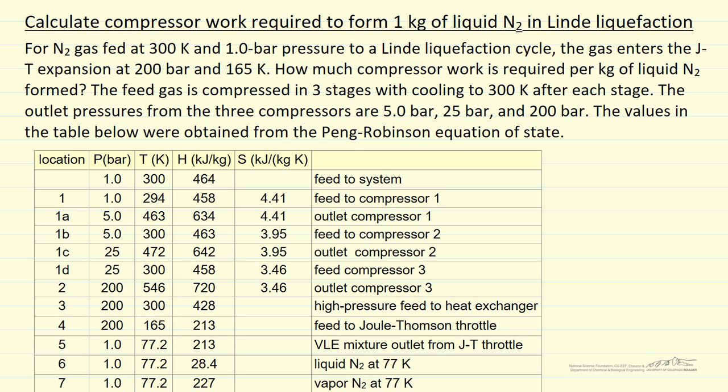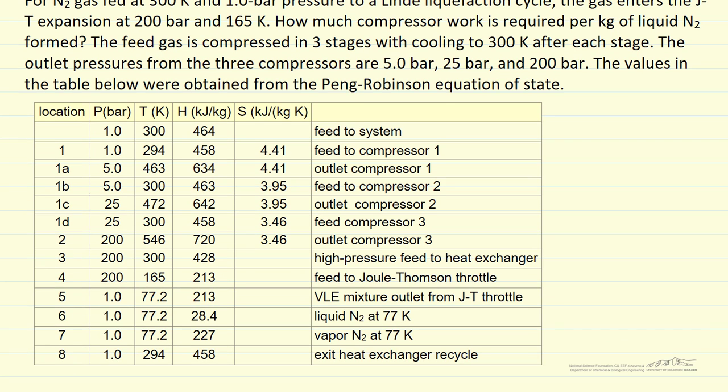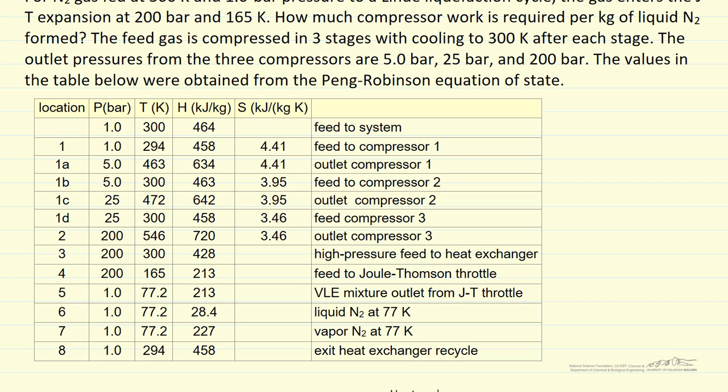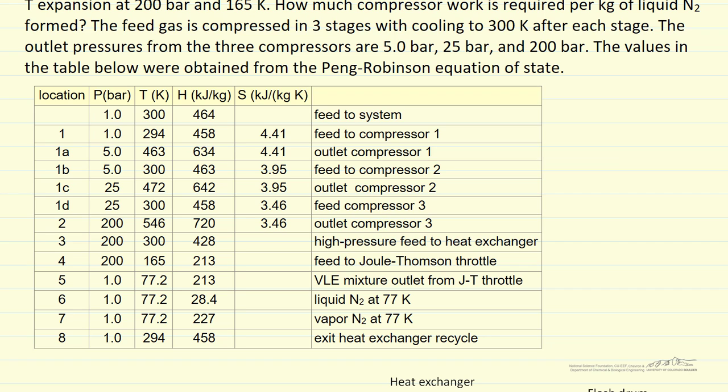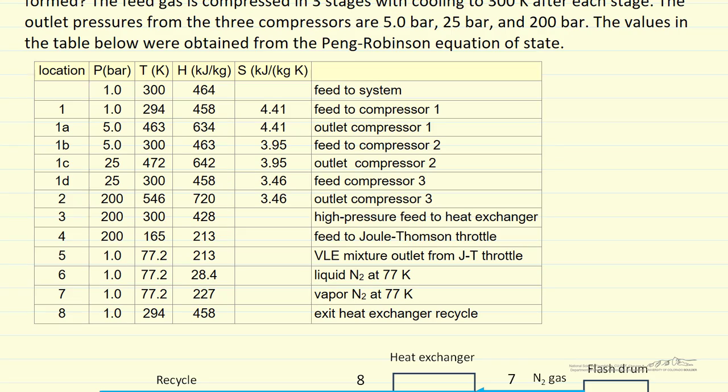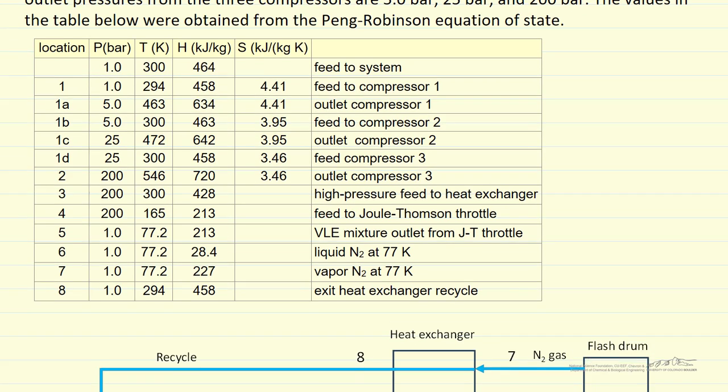The temperature would be way too high and energy requirement would be much higher. So in order to do the calculations, we're going to use properties for nitrogen obtained from Peng-Robinson equation of state, because clearly enthalpy depends on pressure as well as temperature for a real gas. The values shown here are from calculations. We calculated the fraction of the feed to the Joule-Thomson expansion that becomes liquid as 0.0705. So we use those numbers to determine the energy requirement per kilogram of liquid nitrogen.